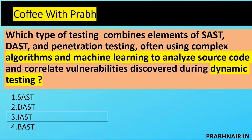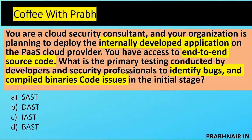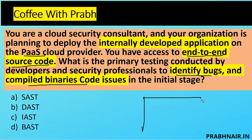Next question: You are a cloud security consultant and your organization is planning to deploy an internally developed application on a PaaS cloud provider. You have end-to-end access to the source code. What is the primary testing conducted by developers and security professionals to identify bugs and compiled binary code issues in the initial stage? Key keywords: end-to-end source code access, developing on PaaS, identifying bugs in compiled binary. When you have access to source code or compiled output, it may be pointing to a white box with a SAST approach.